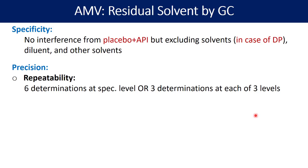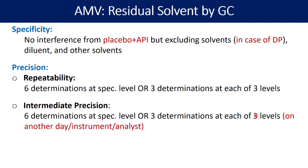This is the first level of precision — repeatability. The second level is called intermediate precision. You determine repeatability on one day, then on another day using another instrument, and you ask another analyst to perform the similar repeatability experiment. If the results are also precise and meet the acceptance criteria, that experiment is called intermediate precision — performed on another day, using another instrument, by another analyst.